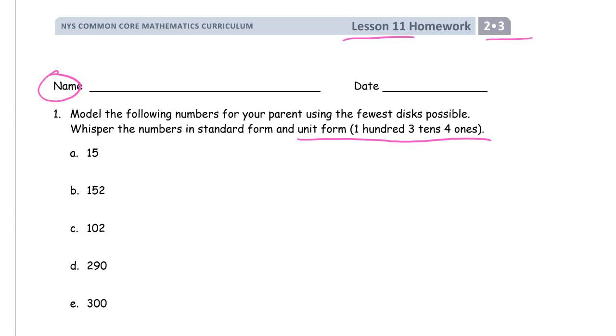So 15, using the fewest disks possible, we will need a 10 and you'll need 5 ones. You could do it with 15 ones, but that wouldn't be the fewest number of disks. This only takes 6 disks. If you did it with 15 ones, it would take 15 disks.